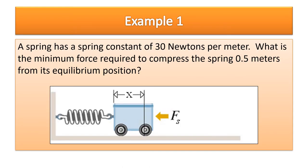Example one: a spring has a spring constant of 30 newtons per meter. What is the minimum force required to compress the spring 0.5 meters from its equilibrium position? Pause the video and try it.